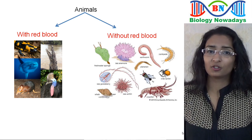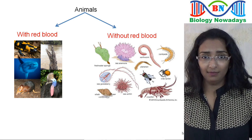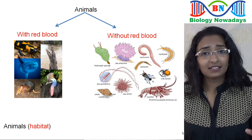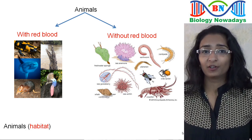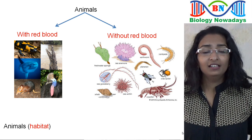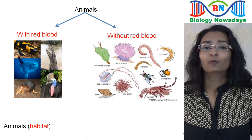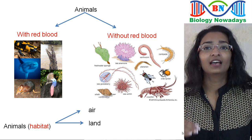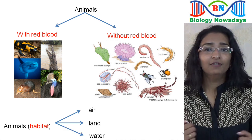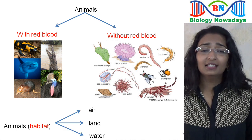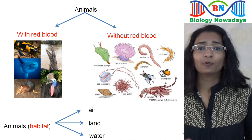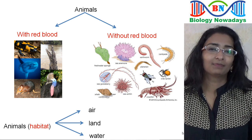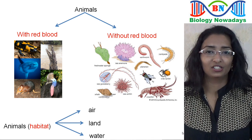Aristotle classified animals into a group with red blood and another group without red blood. There is an opinion that Aristotle also divided animals on the basis of their habitat — the place where an organism lives. He divided animals into those which live in air, on land, and in water. Even though it had many problems, this classification was used for nearly 2,000 years because not much progress was made in biology during those years.